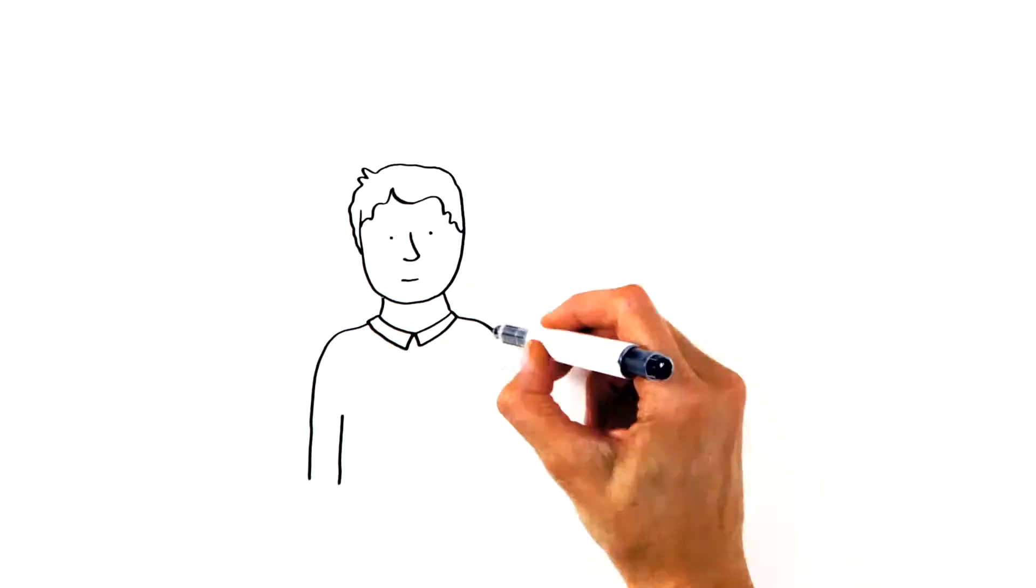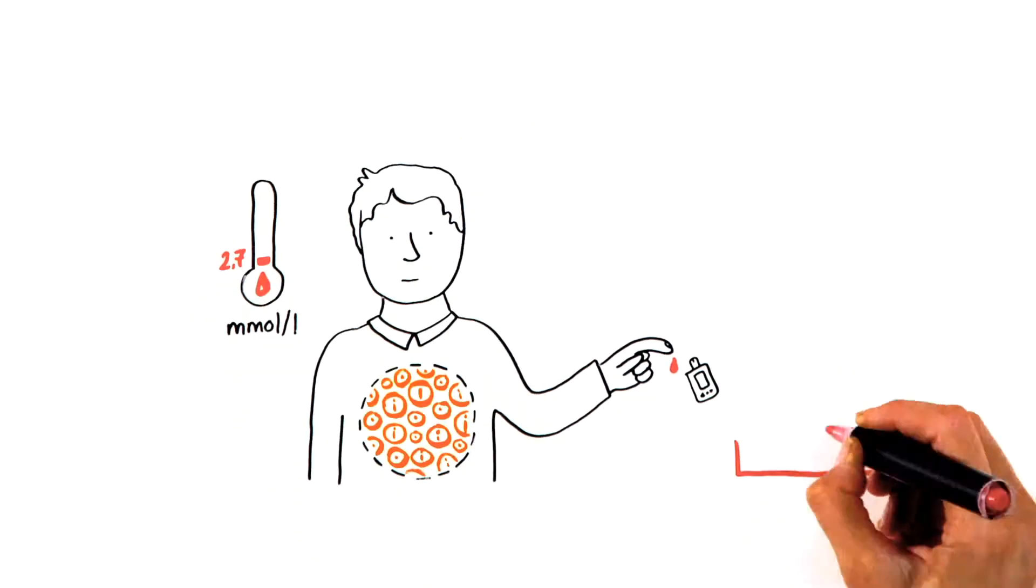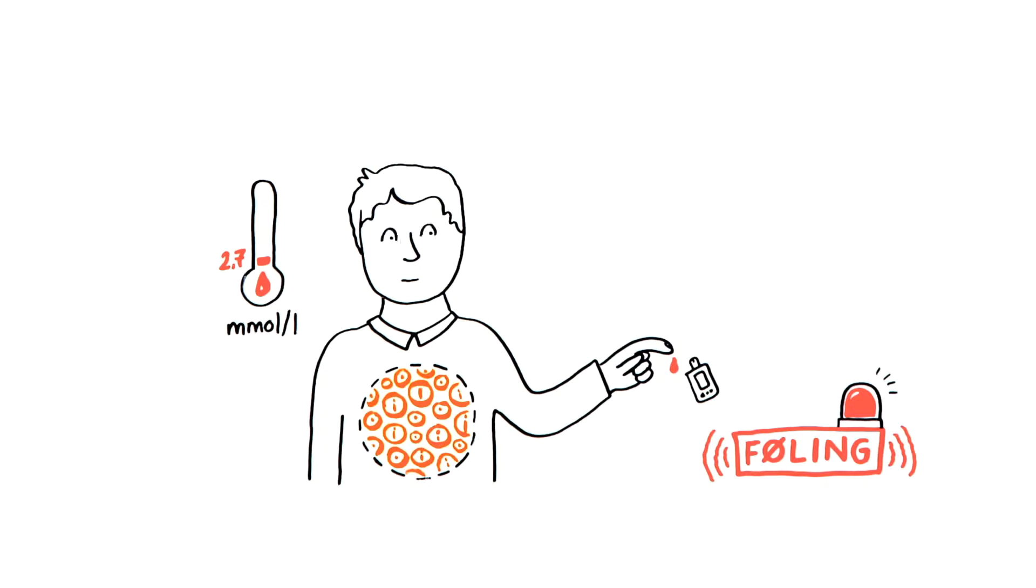If you have diabetes and too much insulin in your body, you get hypoglycemia or a hypo.